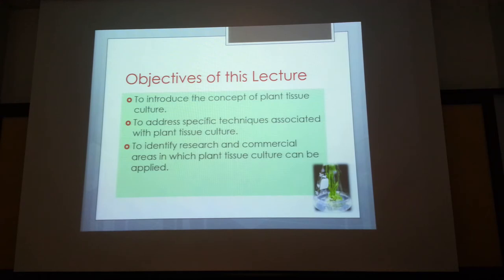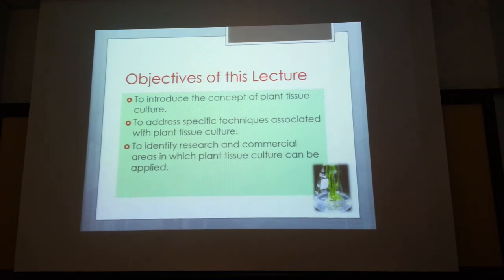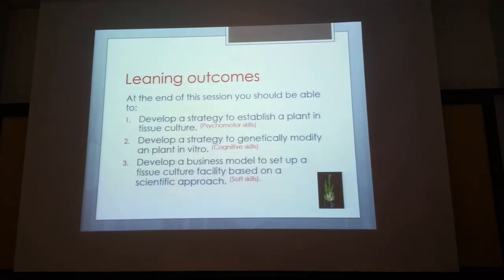Tissue culture is a major component of the biotech industry. Many plants are propagated this way — for example, teak in Sabah is propagated via tissue culture because it is a high-value crop. Rice is also used in tissue culture because it can be genetically engineered in that system. Any form of genetic engineering requires tissue culture, due to containment issues and because genes cannot be inserted into plants directly without going through this phase.